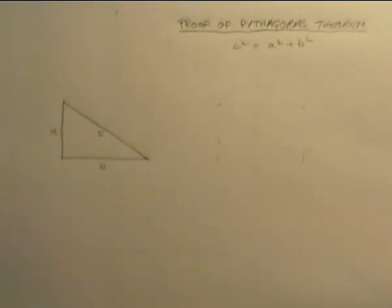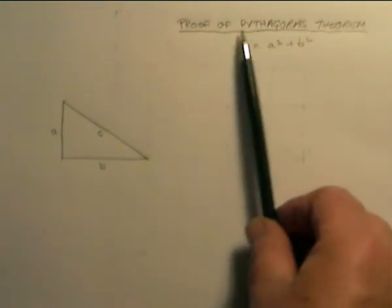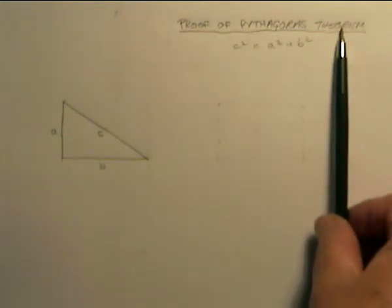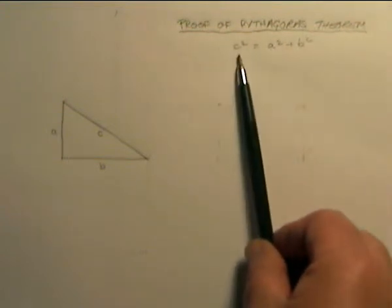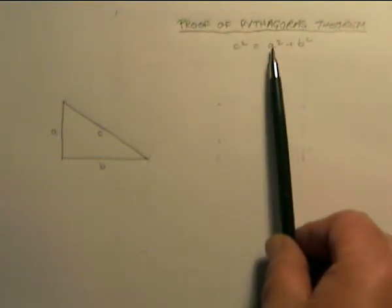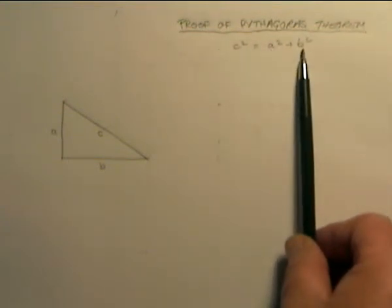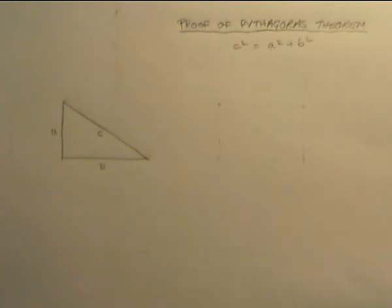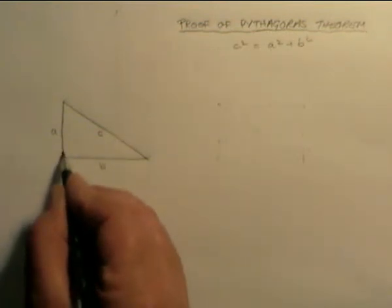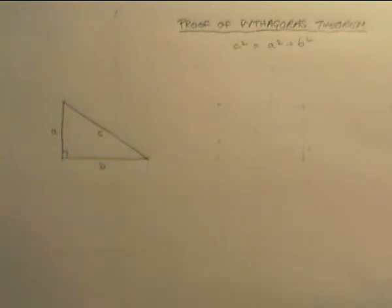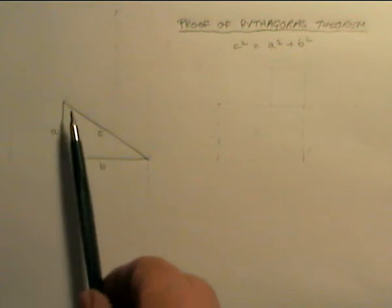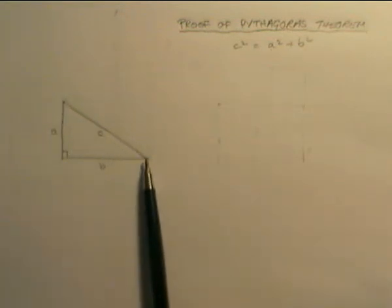Here we have a very quick geometrical proof of Pythagoras theorem, which just to remind you is that c squared equals a squared plus b squared. It's talking about right angle triangles — here's my right angle triangle. Pythagoras theorem says that the square on the hypotenuse (the longest side) is equal to the sum of the squares on the other two sides.